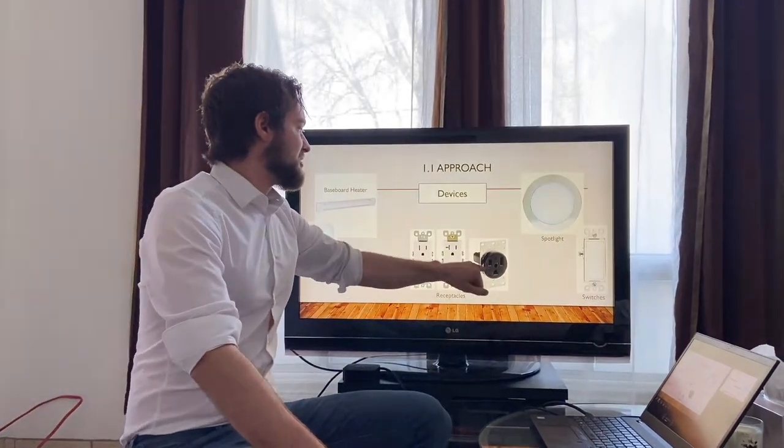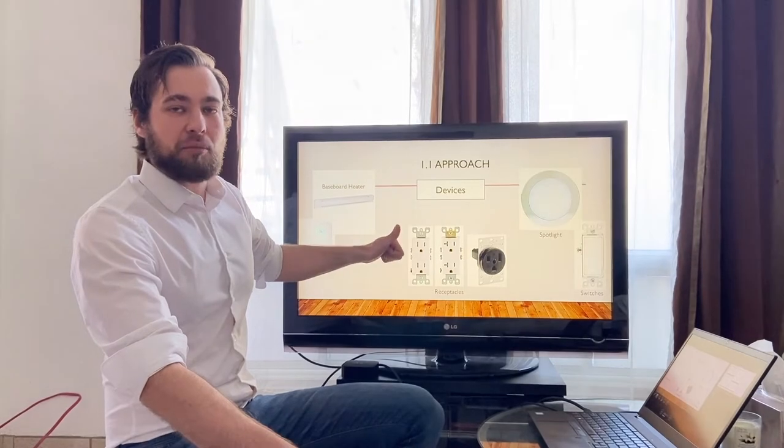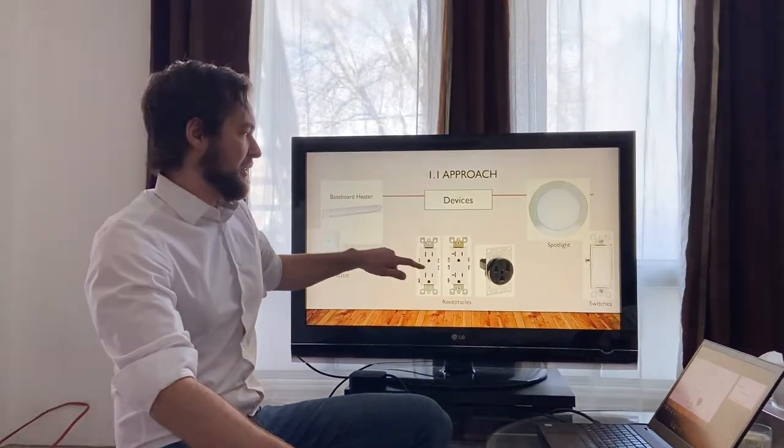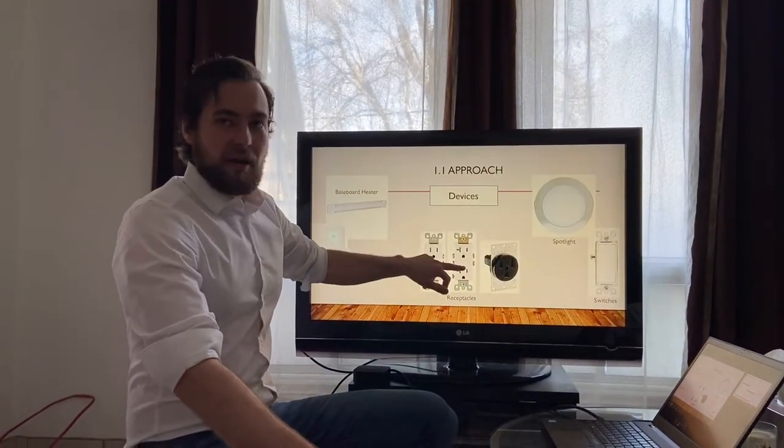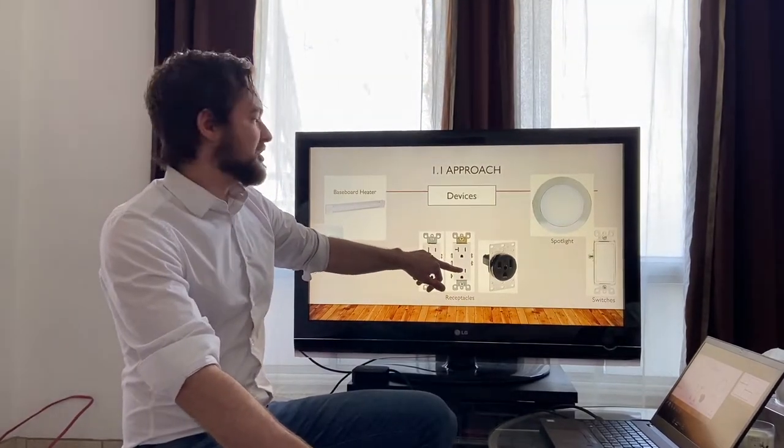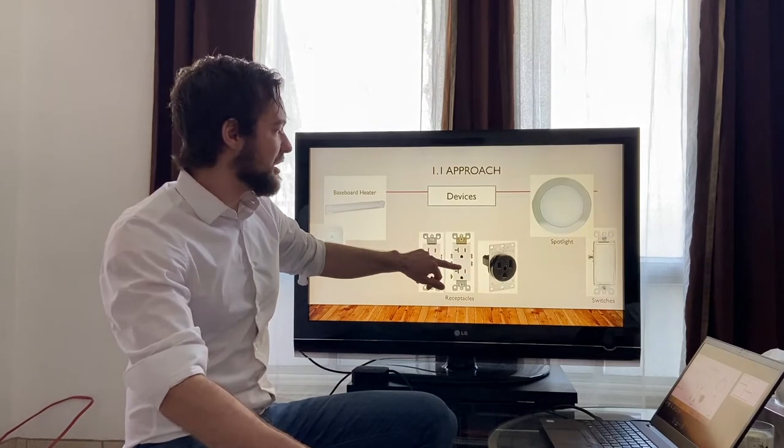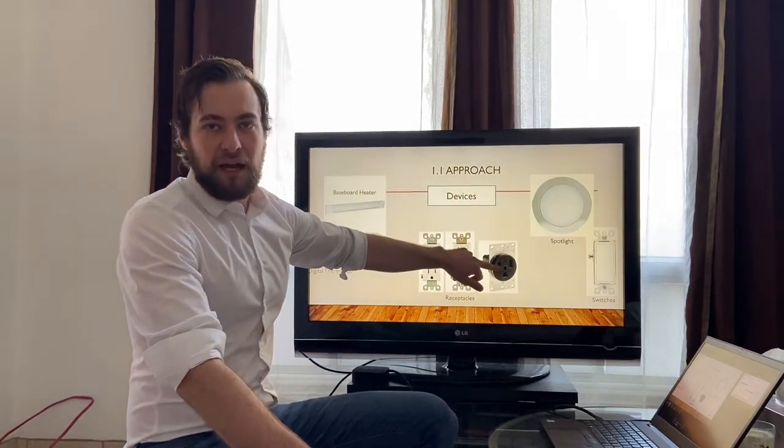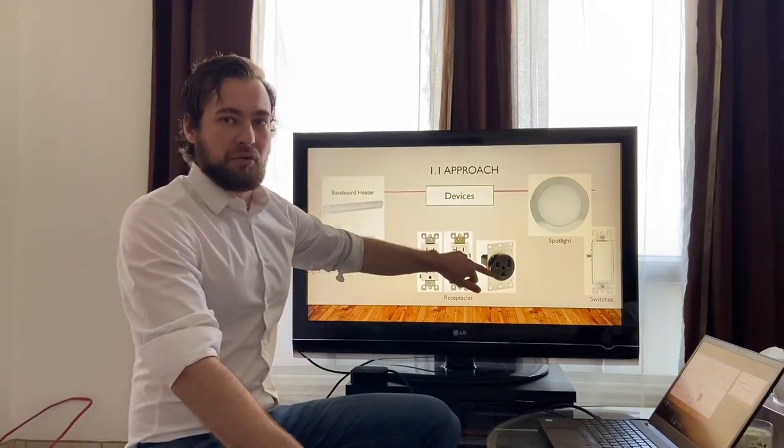Three plugs to be installed. We got the 15 amp which is used for laptop chargers, lamps, televisions. The 20 amp plug which is used for device appliances that pull higher amperages such as your air fryer, toaster oven and hair dryer. And we also got that of the 50 amp for the electric range in the kitchen.